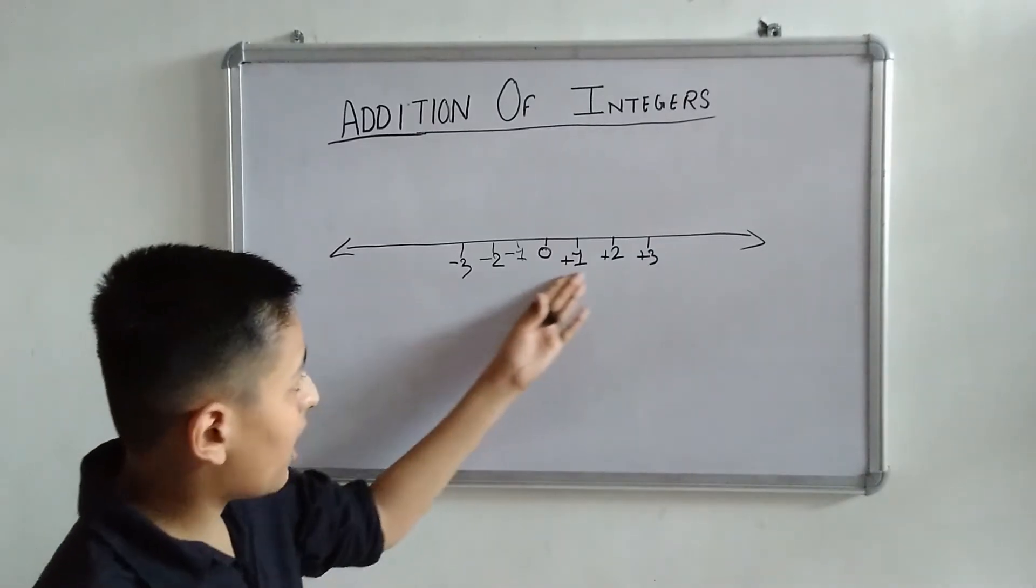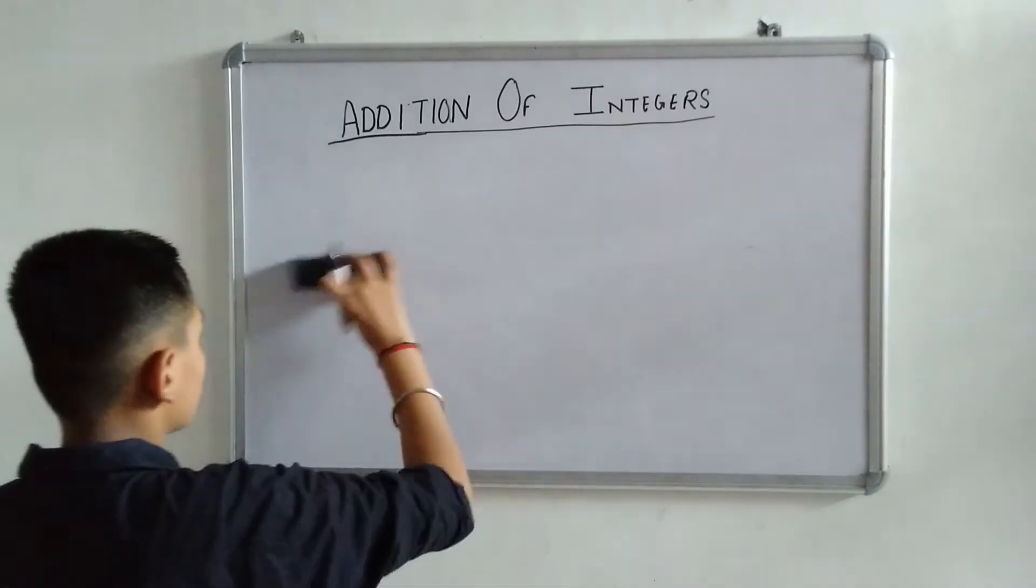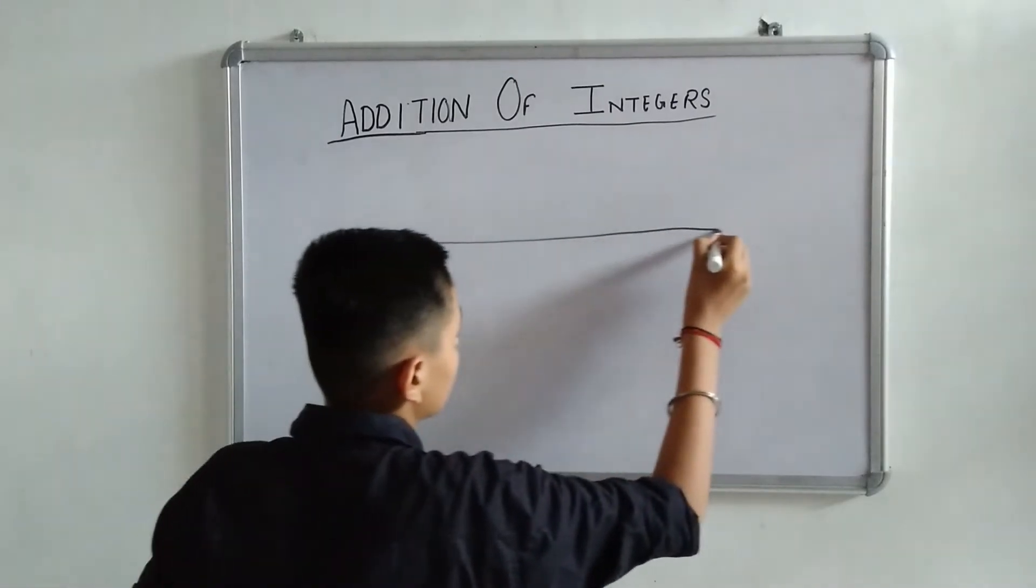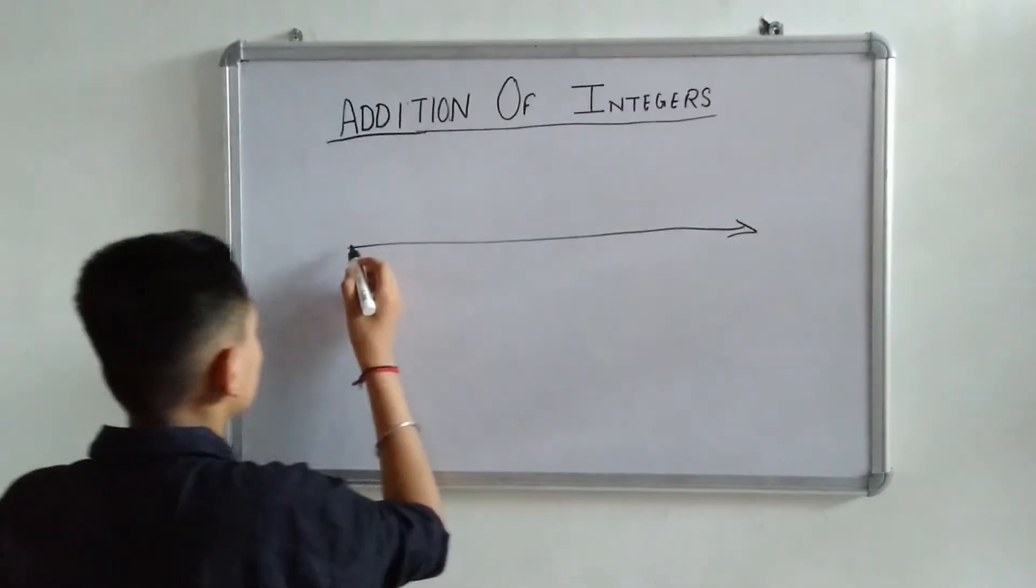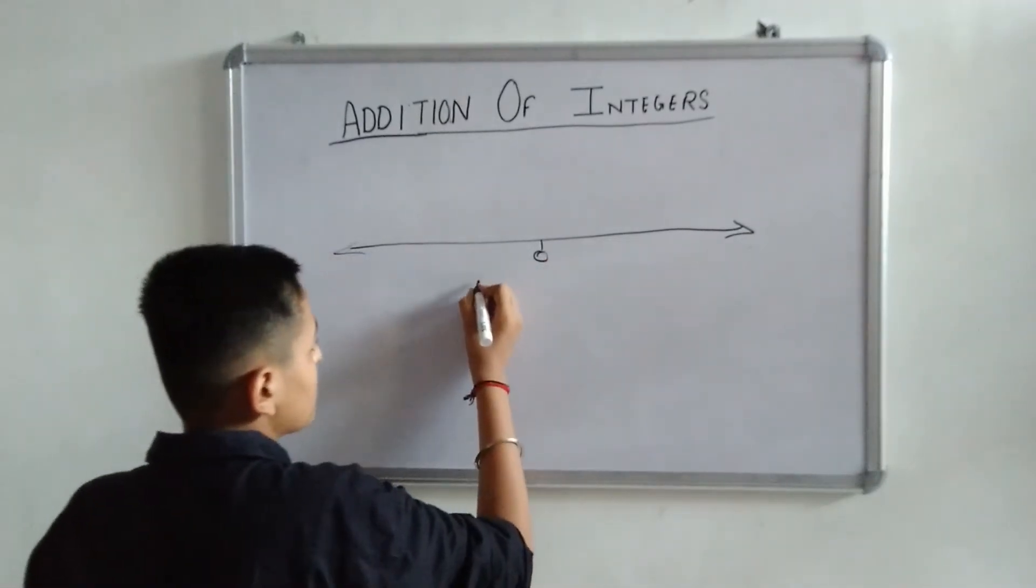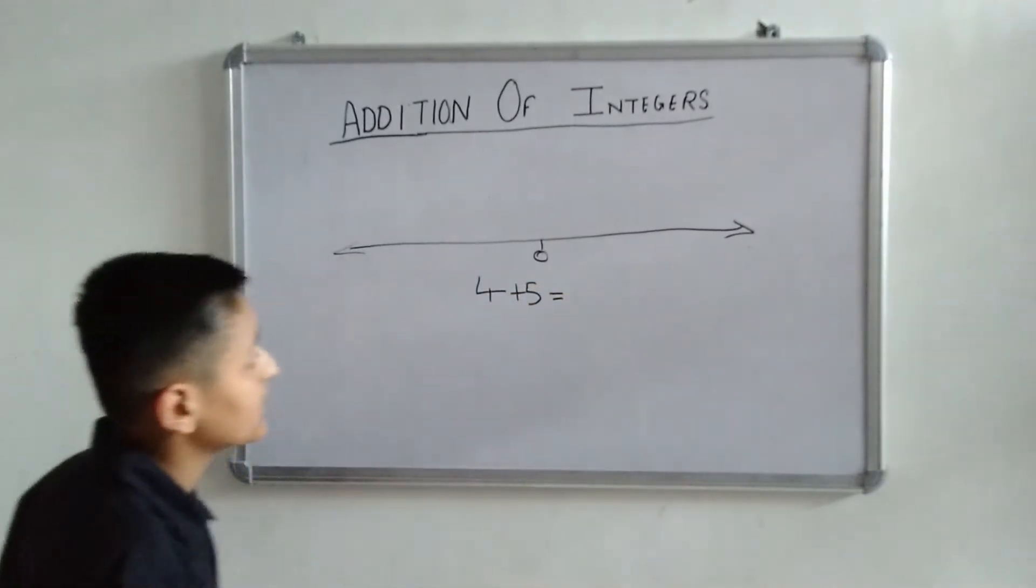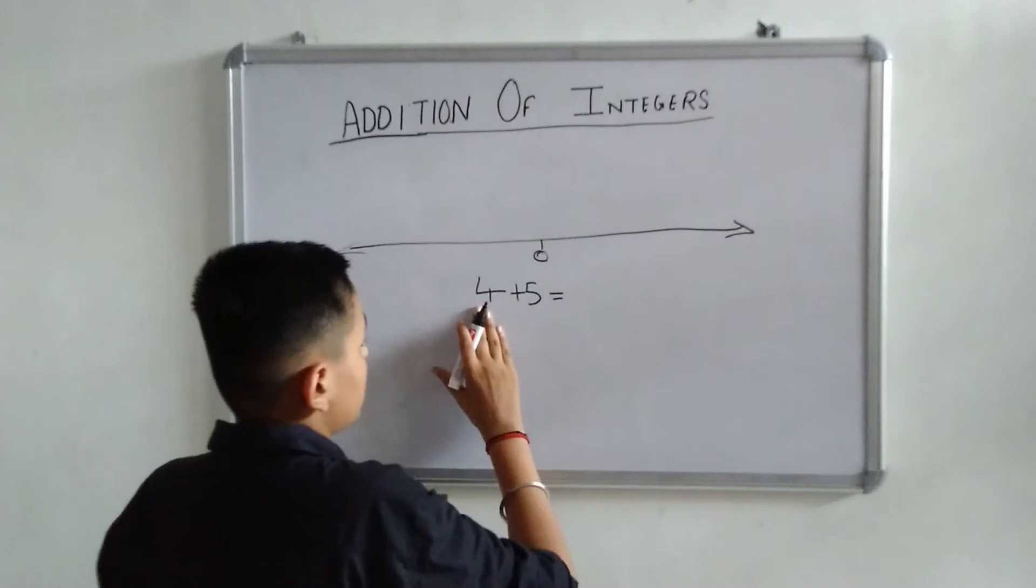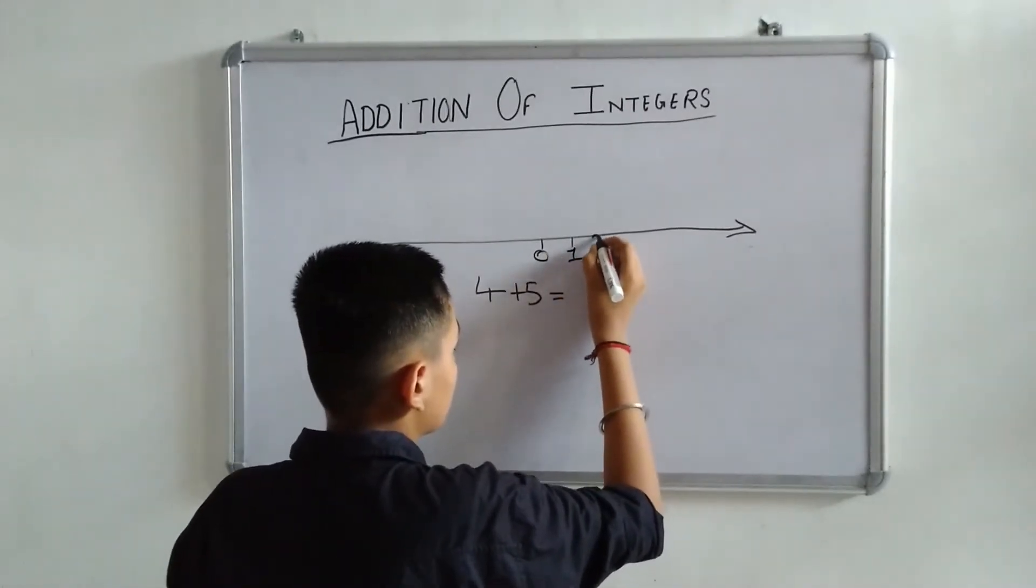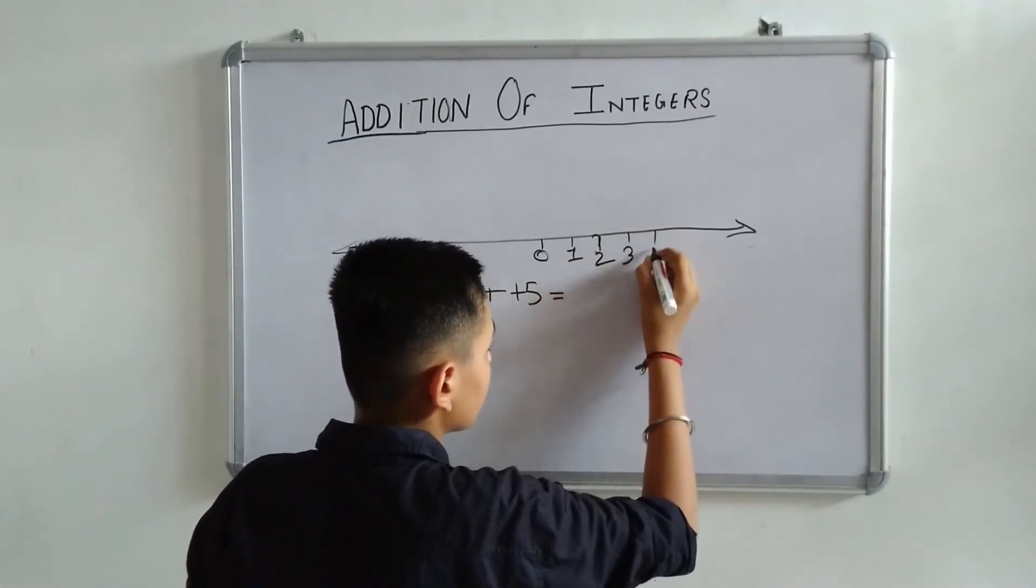Today we are going to learn how to make a number 9. Let's take some example like, just make a line. 0. And take example 4 plus 5. Okay friends! Check first number 4: 1, 2, 3, 4.